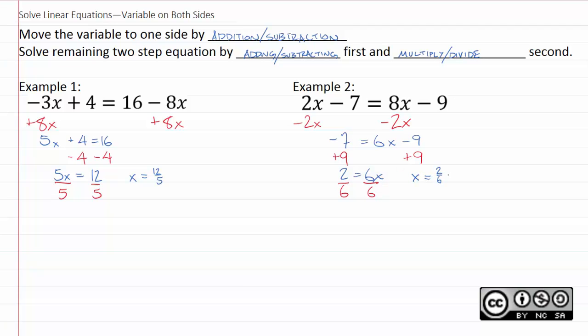x comes out to 2 over 6, but you need to reduce that to lowest terms. And in lowest terms, it comes out to 1 third. So you should see here, this works the same way as the problems you've been doing. You just have the extra step of uniting the variables. So give that a shot, and I'll see you in the next video.